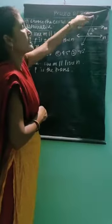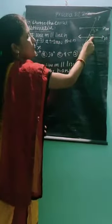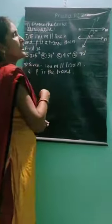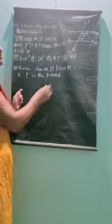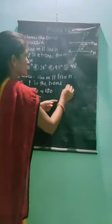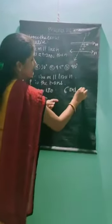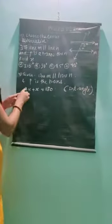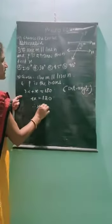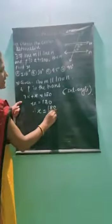These are interior angles. Two parallel lines and one transversal are given, and the measures of two interior angles are given. When two parallel lines and one transversal is given, the interior angles are supplementary — meaning the addition of these two angles should be 180 degrees. So we write: 3X plus X equals 180. The reason is: interior angles.